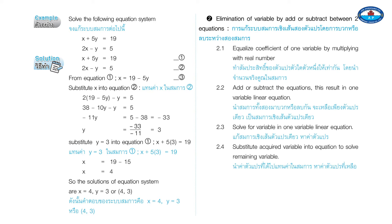Method 2: Elimination — eliminating a variable by adding or subtracting two equations. Step 2.1: Equalize the coefficient of one variable by multiplying with real numbers. Step 2.2: Add or subtract the equations, resulting in a one-variable linear equation. Step 2.3: Solve for the variable. Step 2.4: Substitute the acquired variable into an equation to solve for the remaining variable.